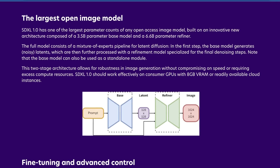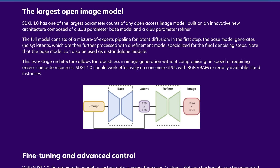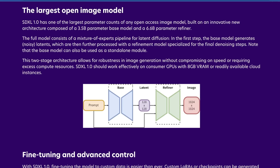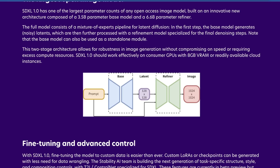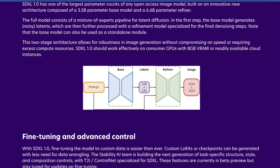Ironically, while we talked about this model gaining performance without getting massive, it is the largest open image model we can actually examine technically. SDXL 1.0 has one of the largest parameter counts of any open-access image model — a 3.5 billion parameter base model and a 6.6 billion parameter refiner. These numbers weren't known as of SDXL 0.9. The full model uses a mixture-of-experts pipeline, actually quite similar to how GPT-4 is provisioned. The base model generates noisy latents, which are further processed by the refinement model for final denoising steps. Importantly, the base model can also be used as a standalone module.